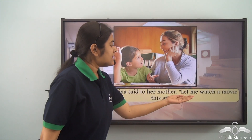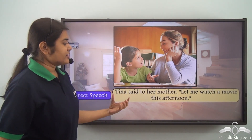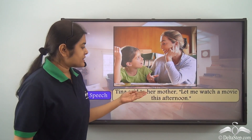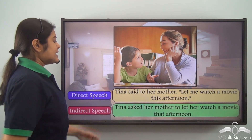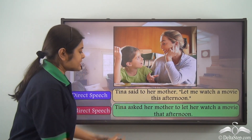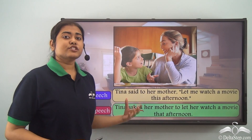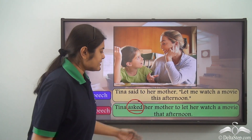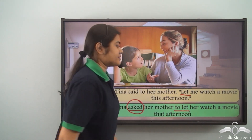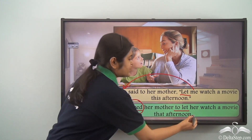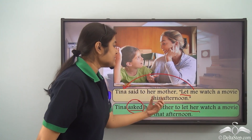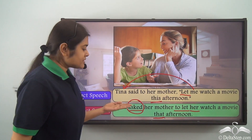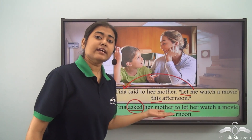Tina said to her mother, 'Let me watch a movie this afternoon.' Here Tina is asking for permission from her mother to allow her to watch a movie. In indirect speech our sentence becomes: Tina asked her mother to let her watch a movie that afternoon. We use the reporting verb 'asked' because she is seeking permission. 'Let me' changes to 'let her', and 'this' changes to 'that' — a change we have already learned.